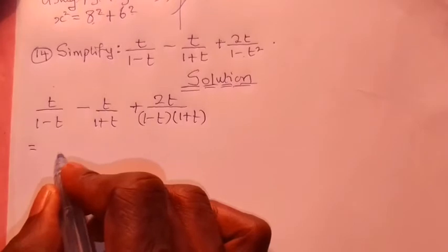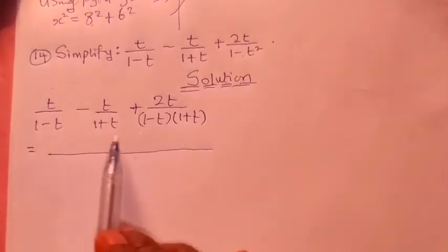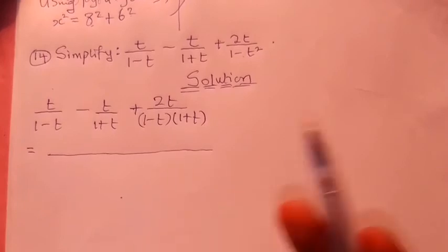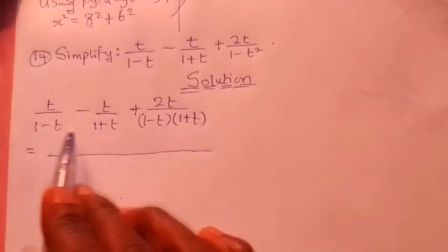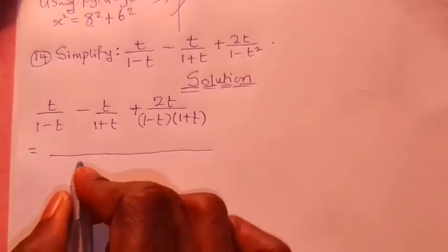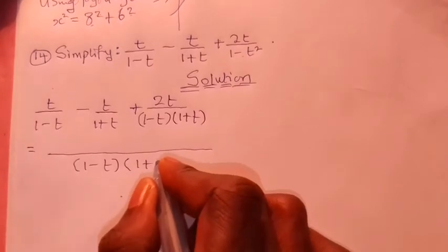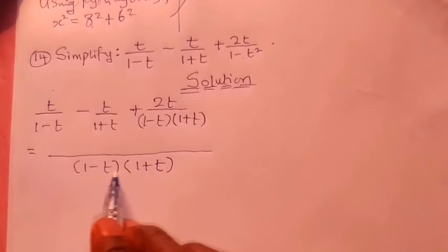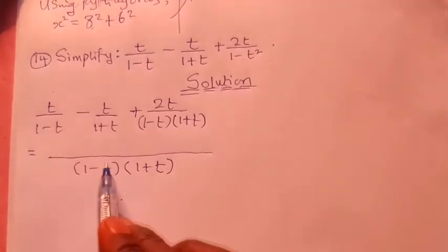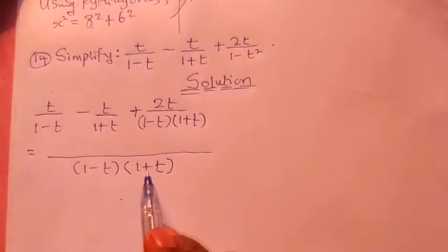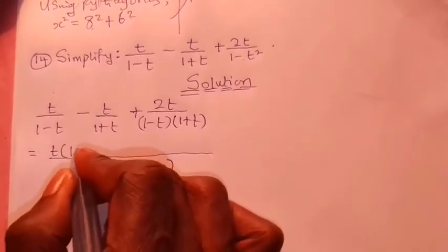The next step is to find the LCM of the denominators: (1 − T), (1 + T), (1 − T), (1 + T). By inspection, the denominators are repetitions, so the LCM is simply (1 − T)(1 + T). For the first fraction, (1 − T) cancels, leaving (1 + T) multiplied by T at the top, giving T(1 + T).